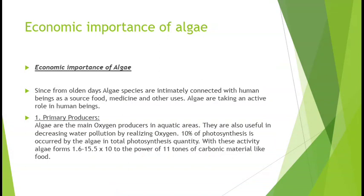Algae is a primary producer. Algae are main oxygen producers in the aquatic era. In the aquatic environment, algae play the main role of oxygen producer. They are also useful in decreasing water pollution by releasing oxygen. 10% of photosynthesis is carried out by algae in total photosynthesis quantity.